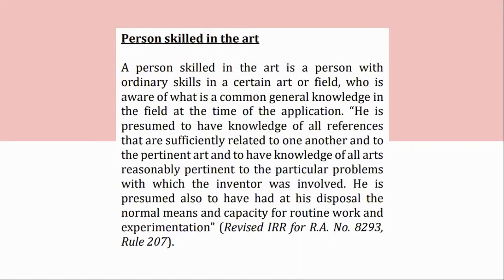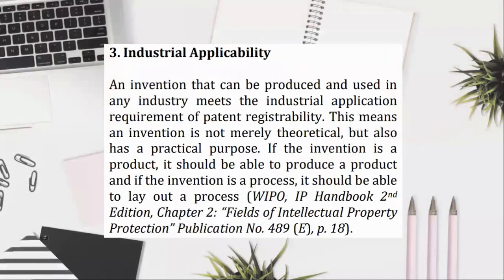(3) Industrial applicability: an invention that can be produced and used in any industry meets the industrial application requirement of patent registrability. This means an invention is not merely theoretical but also has a practical purpose. If the invention is a product, it should be able to produce a product; and if the invention is a process, it should be able to lay out a process. WIPO, IP Handbook 2nd Edition, Chapter 2, Fields of Intellectual Property Protection, Publication No. 489(E), p. 18.